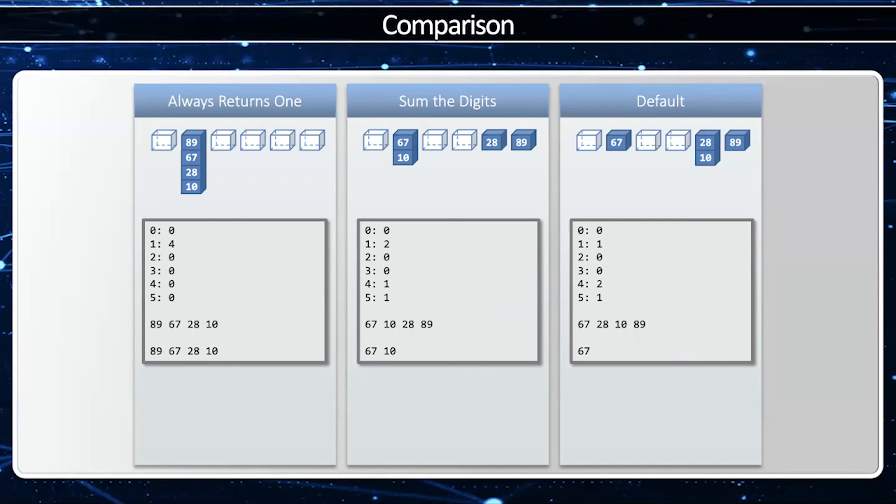Let's take a look at the three different hash functions and how they give us different hash tables. Always return 1 underutilizes most of my hash buckets. So I'm only using bucket 1. Sum the digits is a good even distribution except bucket 1 has a collision.